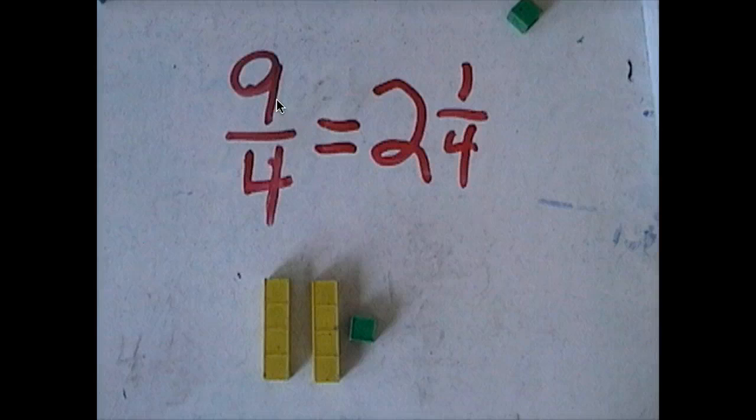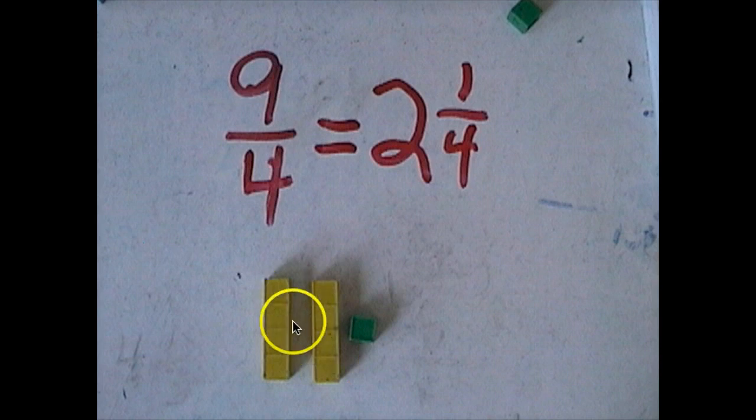Can you get me out nine-fourths? There they are. One, two, three, four, five, six, seven, eight. That one's nine. And that works out to be two and a quarter. Very simple. Very easy.